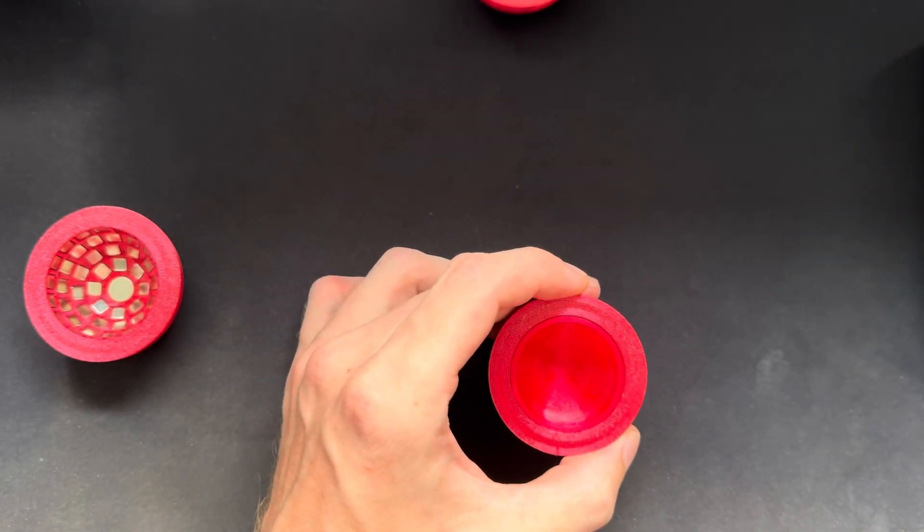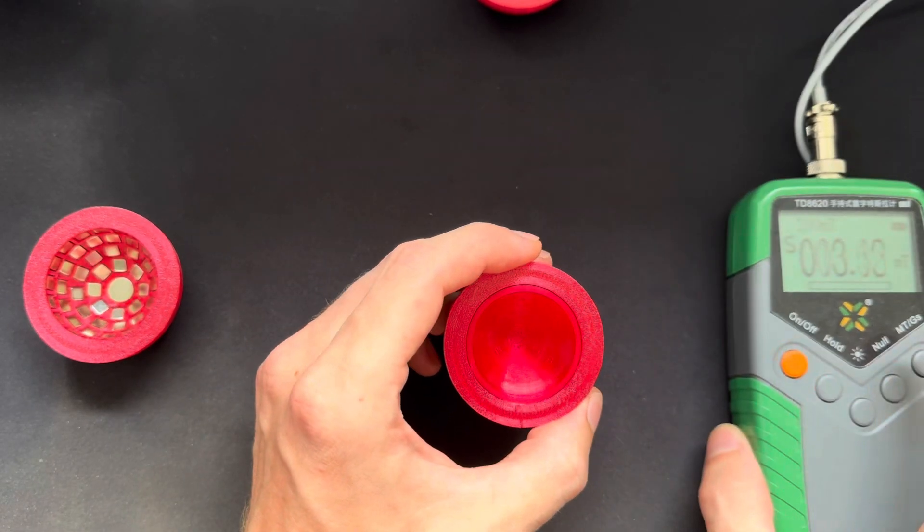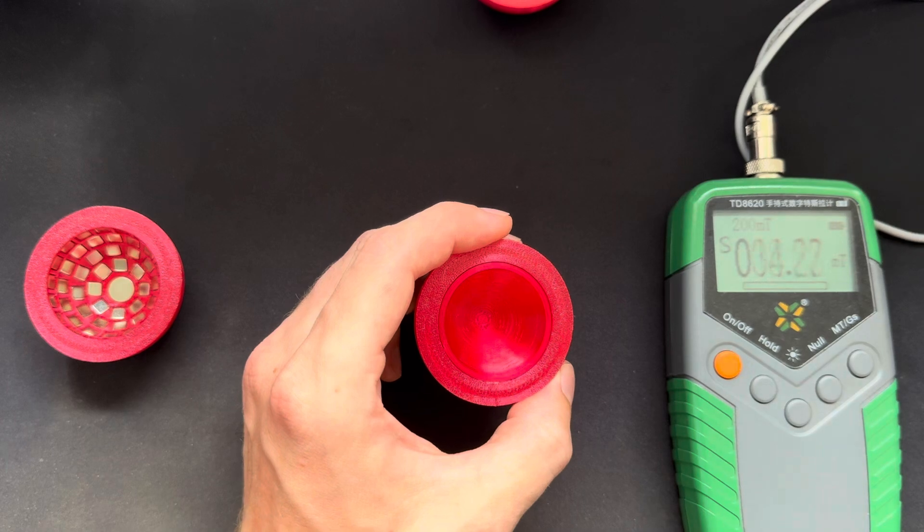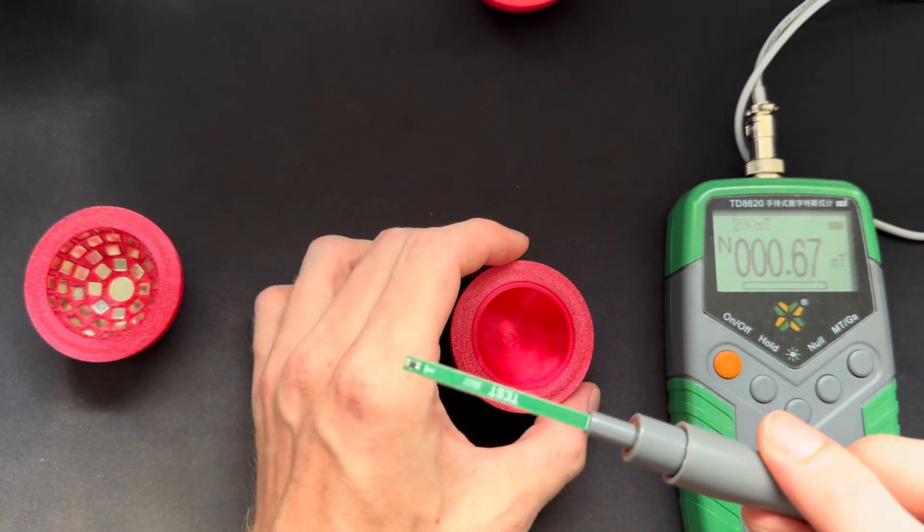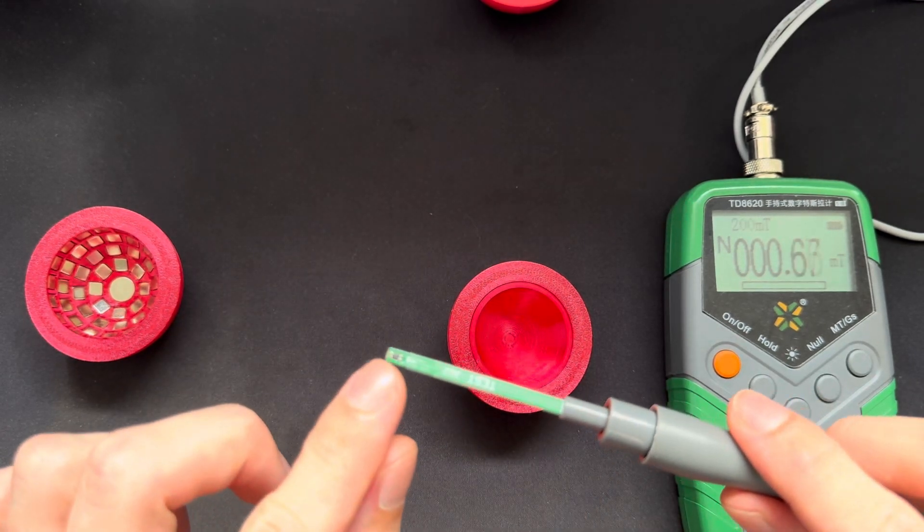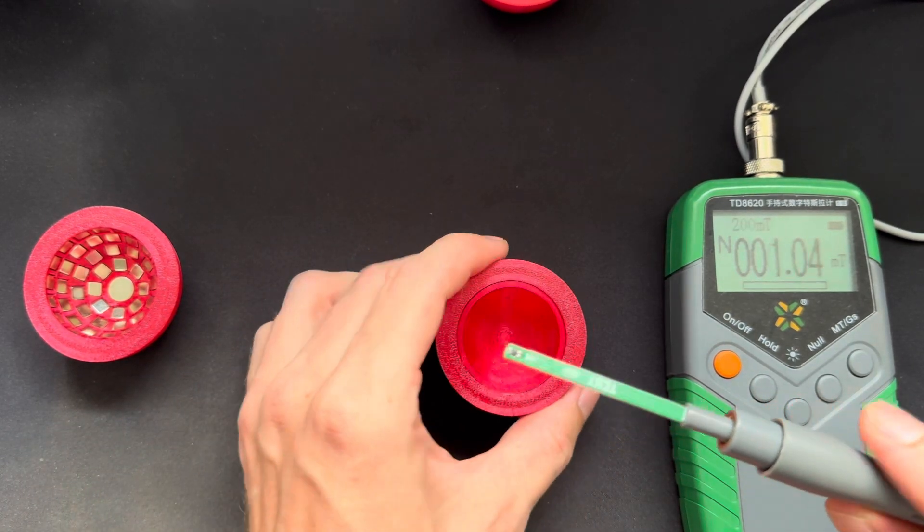This is what it looks like here. It looks kind of similar. And now I will show you with my gauss meter the field strength and how it differs. So let me start off with this. Here I have my probe. This black spot here is the probe itself.